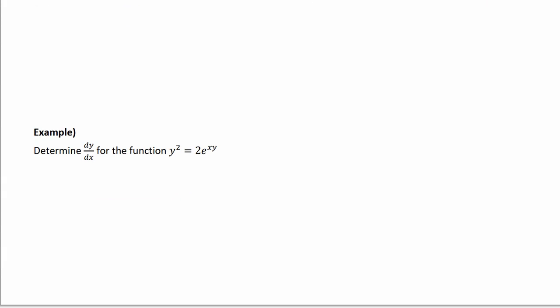Last one here, determine dy/dx for that function. So this is another implicit differentiation. I get 2y y prime equals 2e to the xy times the derivative of x times y, which is product rule. So times x y prime plus y. And then solve for y prime.